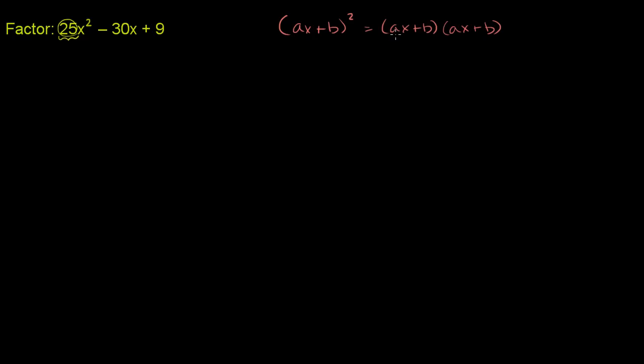Well, this is the same thing as ax plus b times ax plus b, which is the same thing as ax times ax. Ax times ax is a squared x squared plus ax times b, which is abx, plus b times b, plus b times b, so plus b squared.